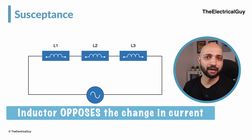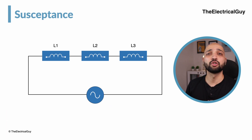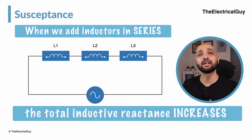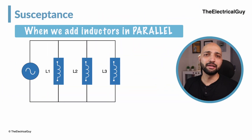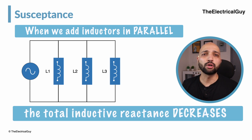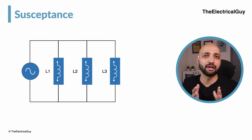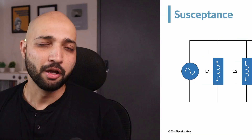Now let's talk about susceptance. The opposition offered by an inductor or capacitor is different from that of resistance — we call it reactance. The inductor opposes the change in current rather than the flow of current, and hence we call this opposition inductive reactance. When we add inductors in series, the total inductive reactance increases. When we add them in parallel, the total inductive reactance decreases. This characteristic is completely opposite to that of inductive reactance, and hence we call it by a separate dedicated name — susceptance. Reactance and susceptance are exactly opposite to each other.